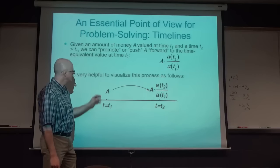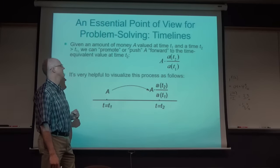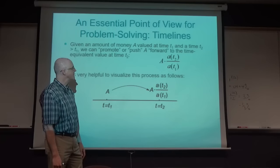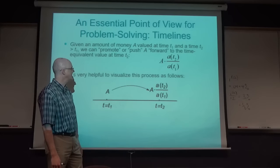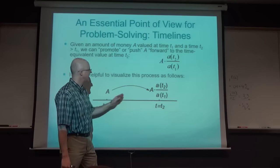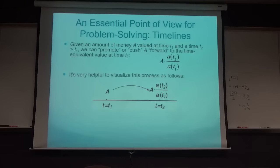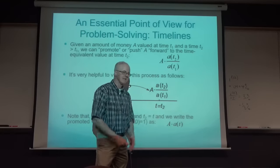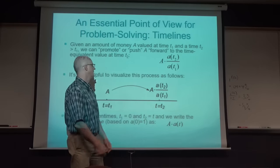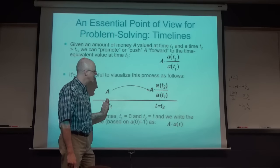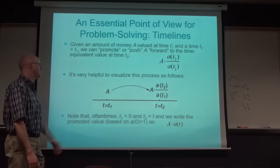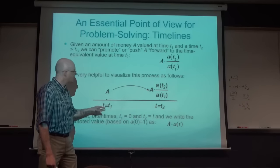On the number line (your timeline): here's time T1, here's time T2, you've got amount A at time T1. Its future accumulated value under this interest regime is A times the ratio a(T2)/a(T1). When T1 is taken to be zero, a(0) = 1, so the fraction simplifies to a(T)/1 = a(T). Take the amount at time zero and find its future value by multiplying by a(T).